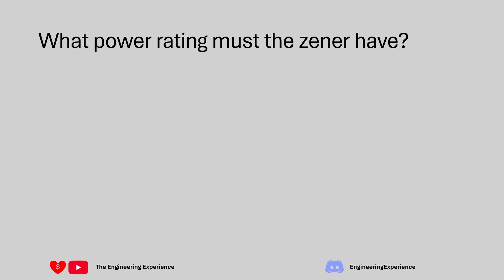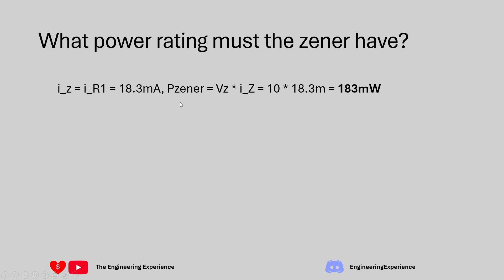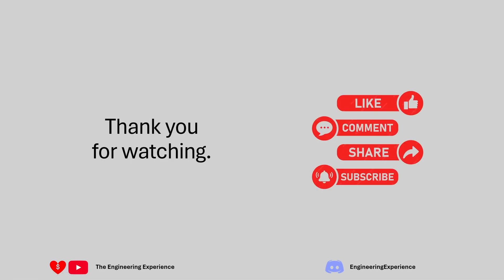For the last part of the question, we need to calculate the power rating the Zener must have. The maximum Zener current is 18.3 milliamps at no load and maximum power supply. Multiplying by the Zener voltage of 10 volts gives 183 milliwatts - that's the required power rating for the Zener diode. Obviously go above that if building this circuit in real life. Thank you for watching - don't forget to like, comment and subscribe. I'm continuing with the Art of Electronics series, and consider becoming a member or giving a super thanks to support the channel.